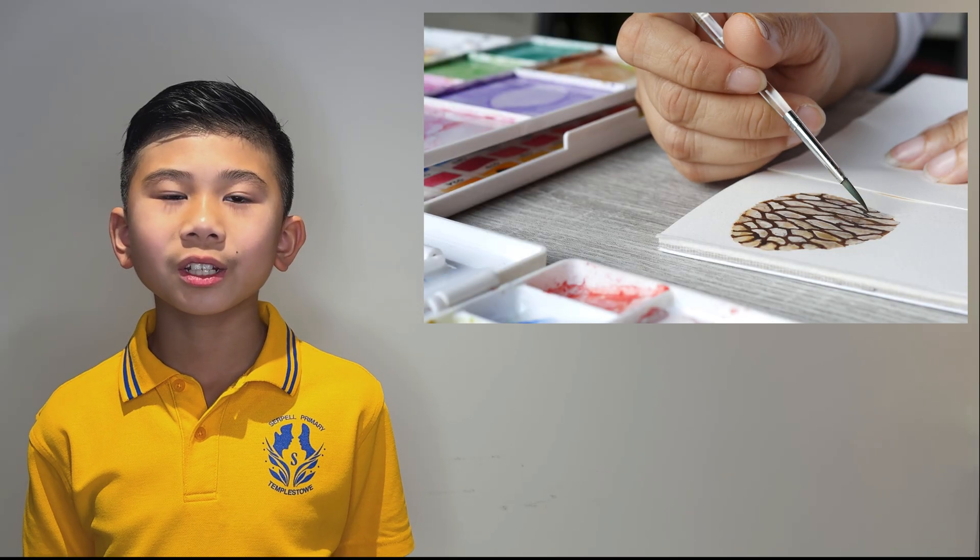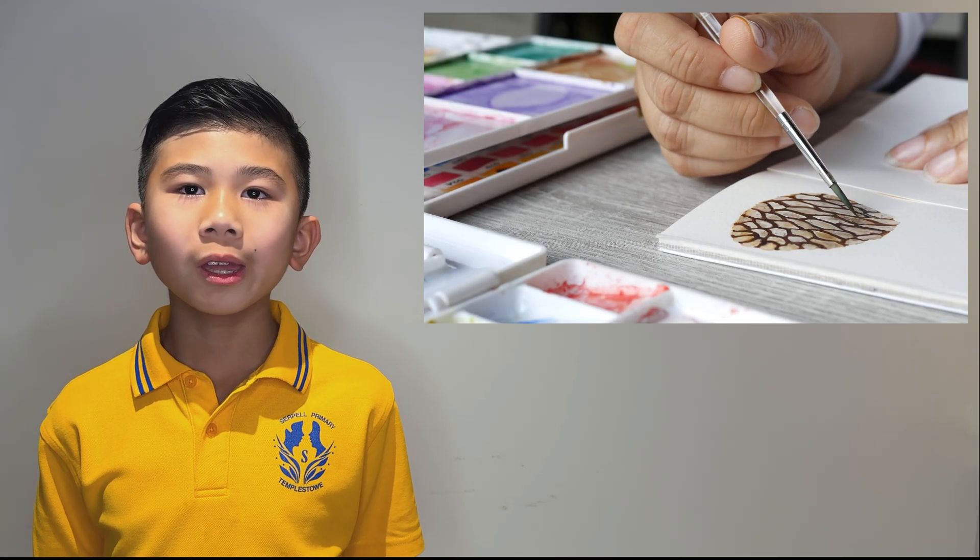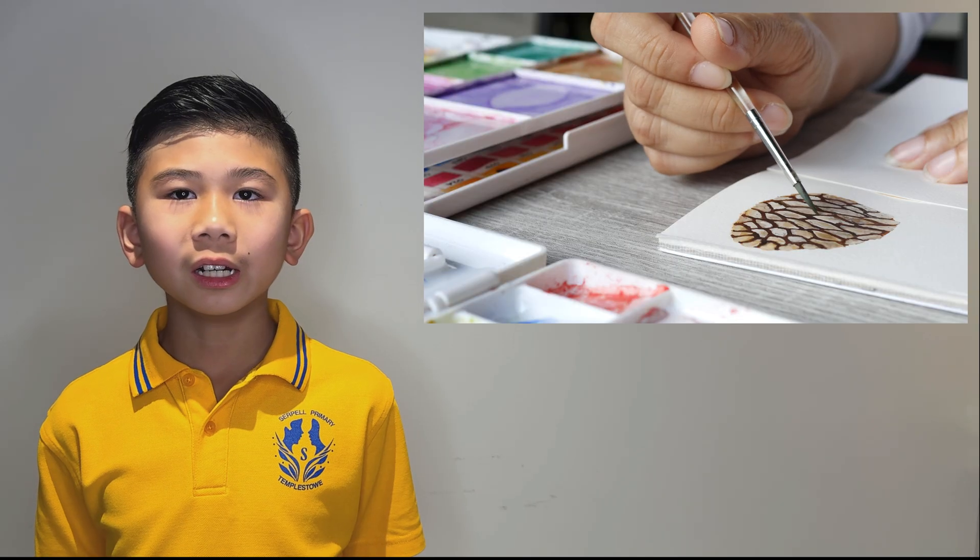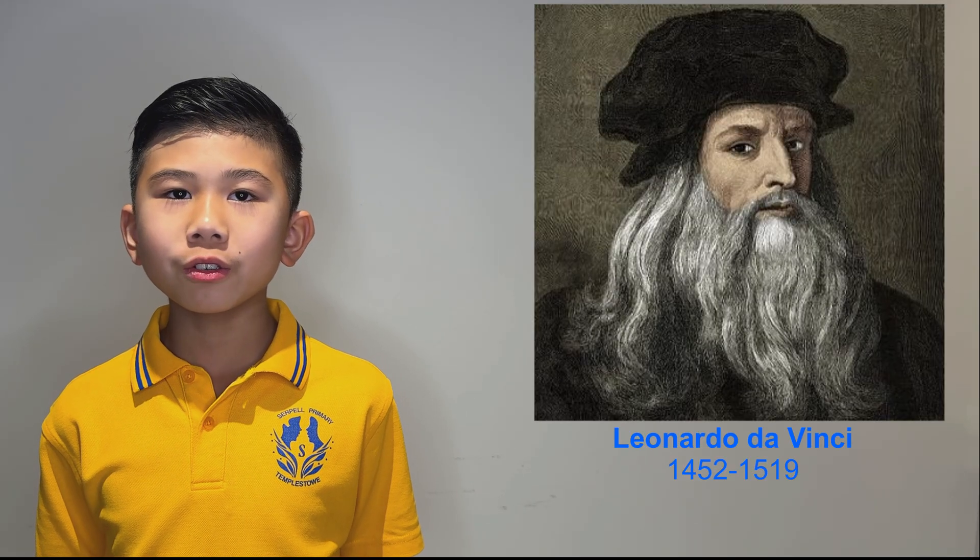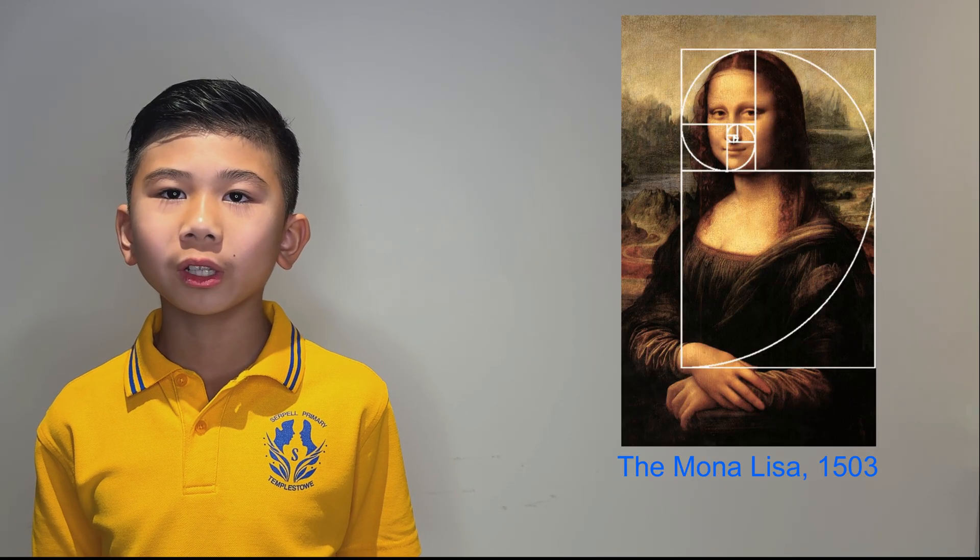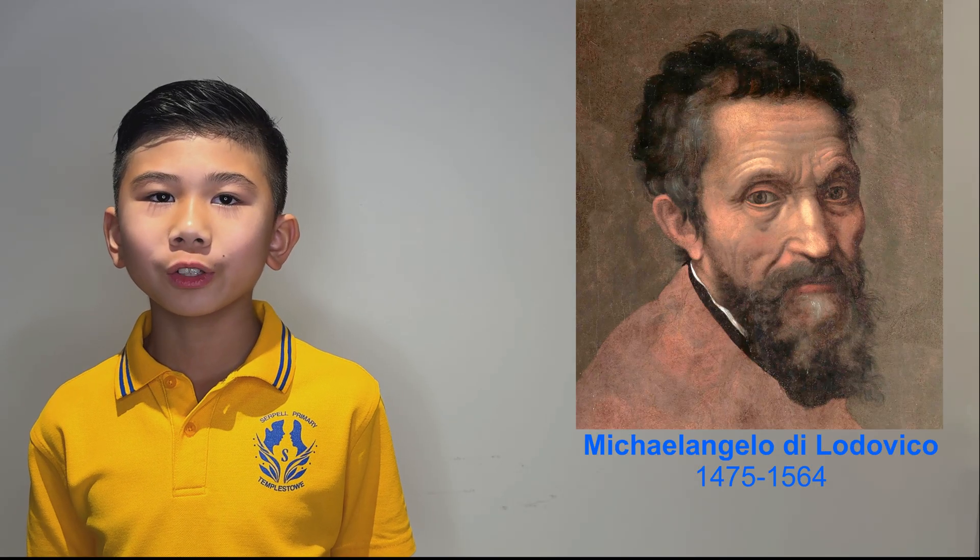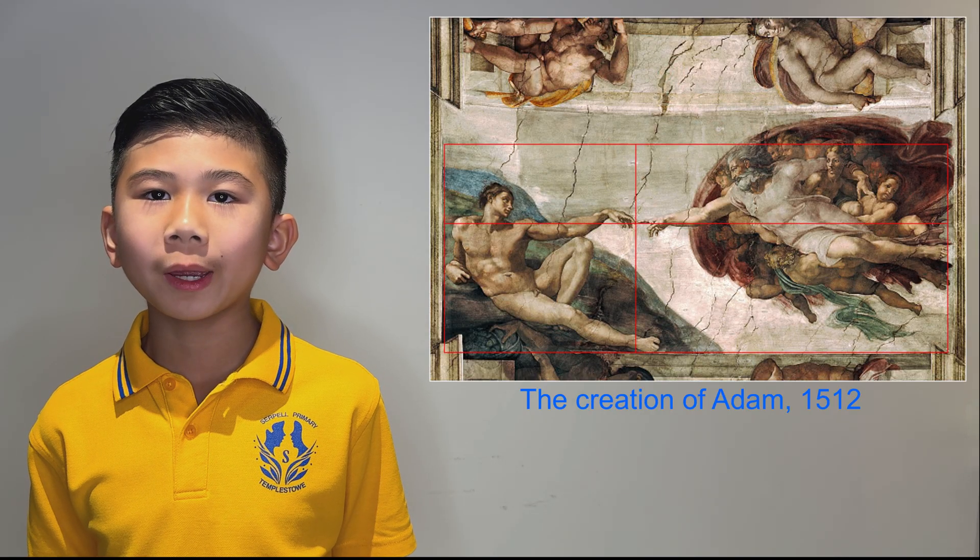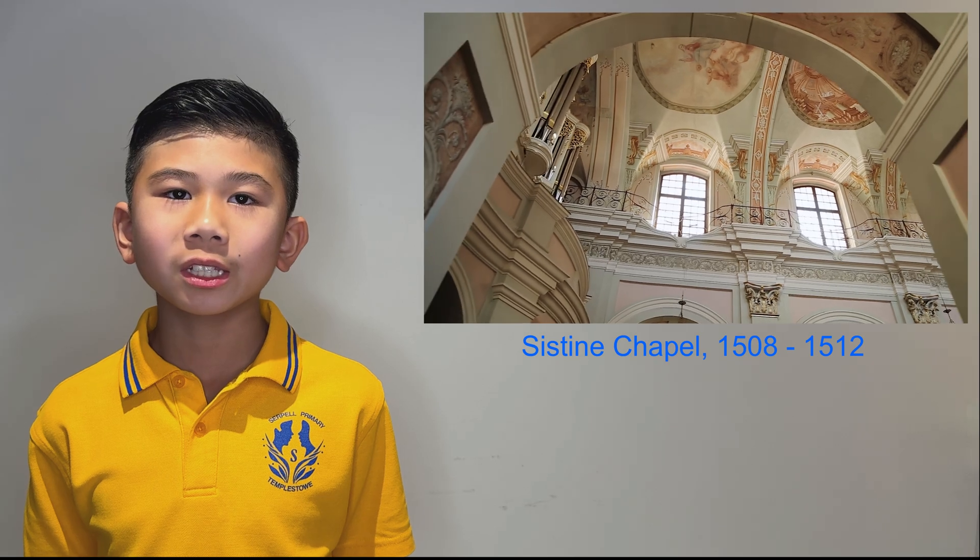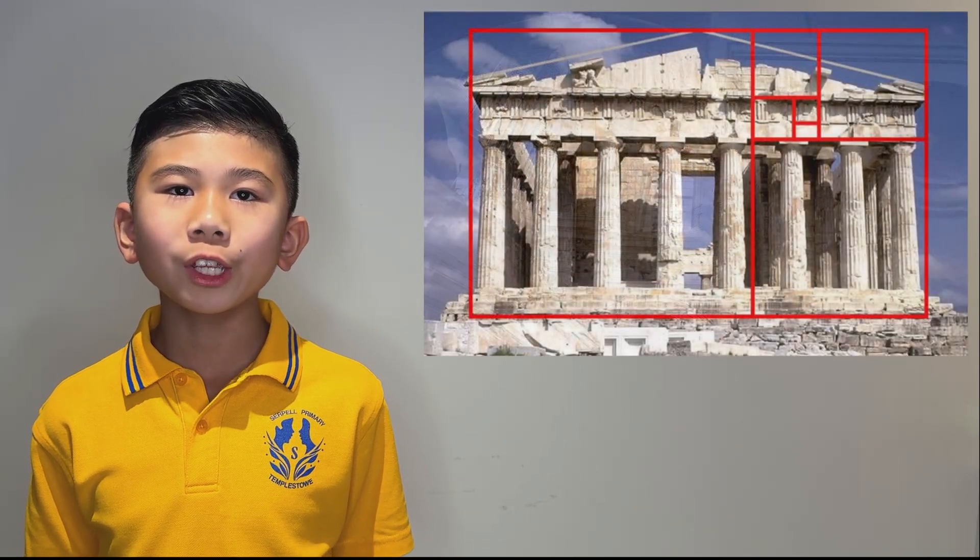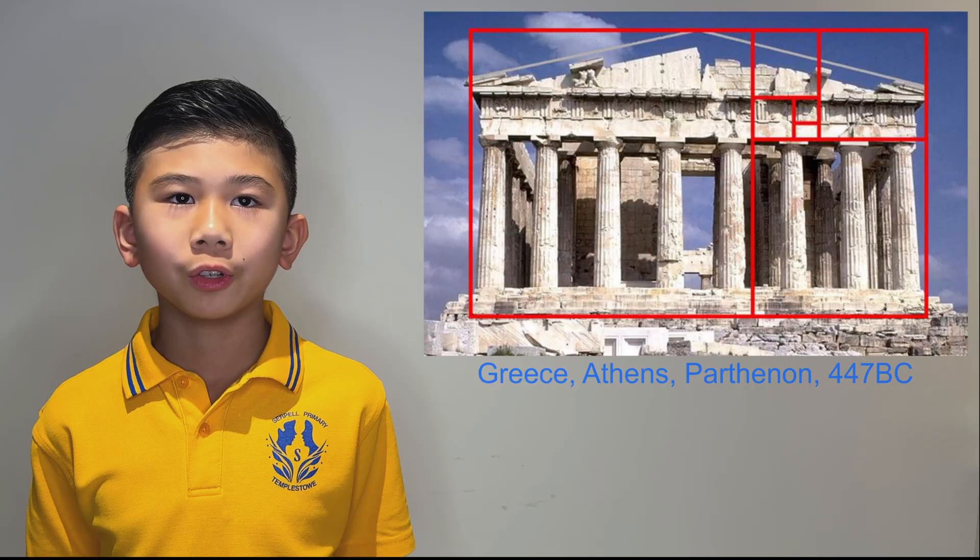Artists and architects love the Golden Ratio because it's naturally pleasing to the eyes. Leonardo da Vinci used it in his paintings such as the Mona Lisa and Michelangelo used the Golden Ratio to paint the Creation of Adam at the Sistine Chapel, while ancient Greeks used it in buildings such as the Parthenon.